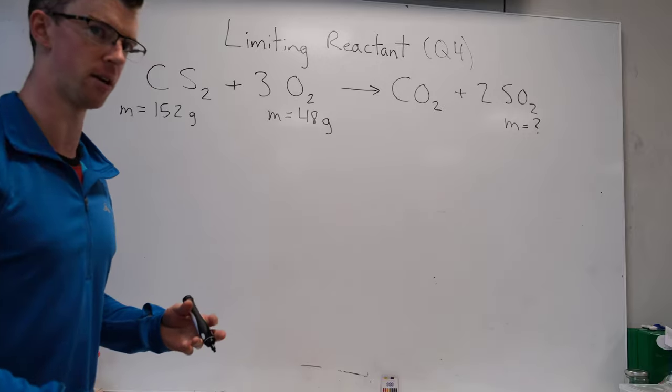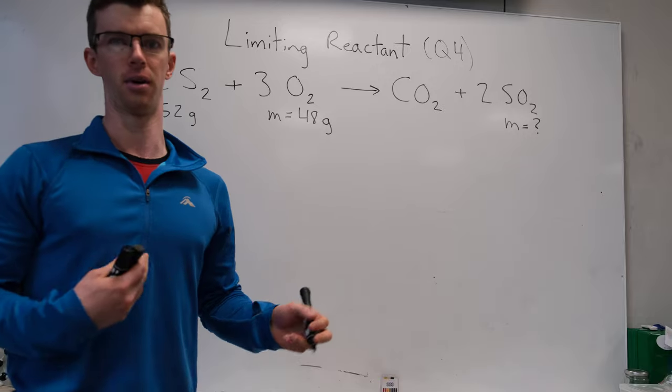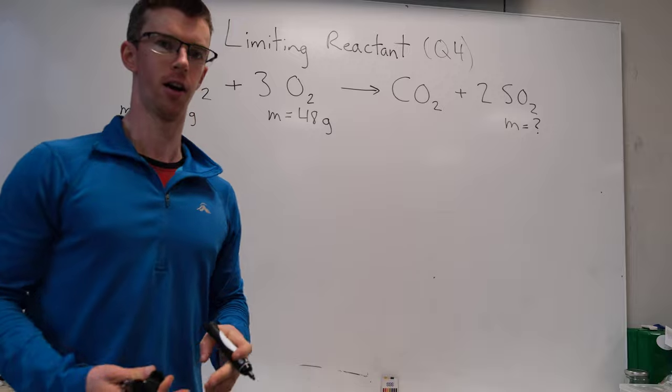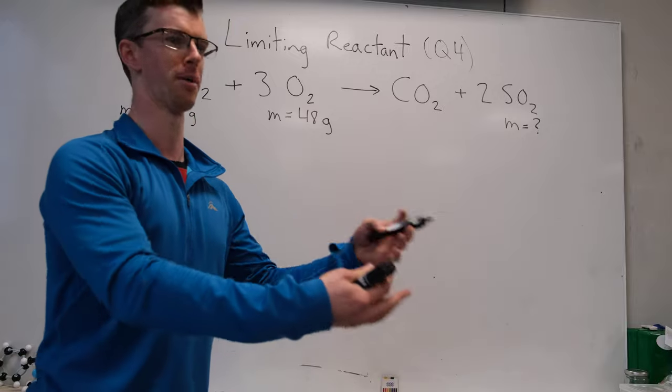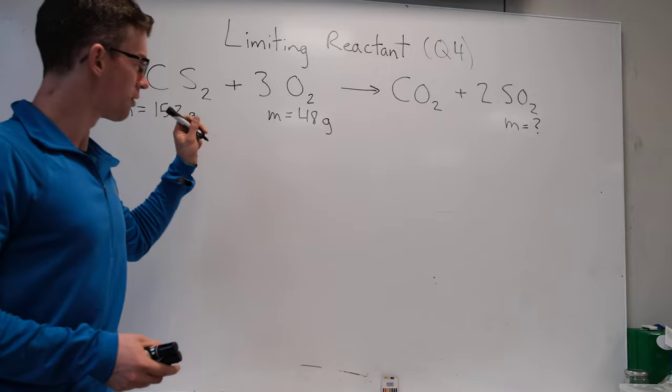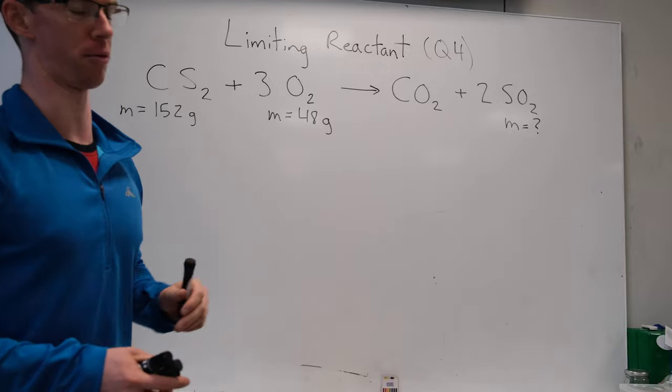It's like if you were trying to bake something and you only had a bit of flour and a ton of sugar, the small amount of flour you have limits how much product or baking you can do. So we're going to figure out which of these reactants will limit how much product we can make.